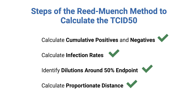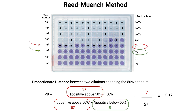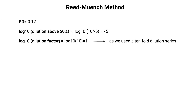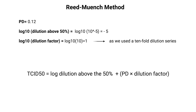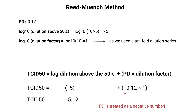Now that we have completed these steps, we are ready to calculate the TCID50. This is done using three values: the PD value, the log dilution above 50%, and the log dilution factor of the dilution series. In our case, we have a PD value of 0.12, the log dilution above 50% is minus 5, and we used a 10-fold dilution series, so the log dilution factor is 1. We can now apply this equation. Please note an important convention: the PD is treated as a negative number, because it represents the fraction of the distance between the dilution steps where the 50% endpoint lies, requiring us to move towards the more diluted step — subtracting the PD from the higher dilution. In our case, this is negative 5 plus negative 0.12 multiplied by 1, so our TCID50 is negative 5.12.